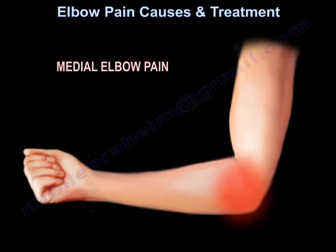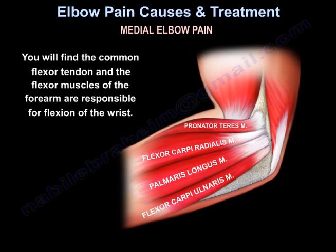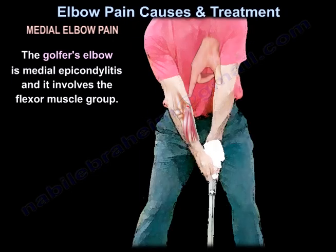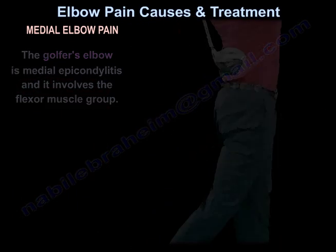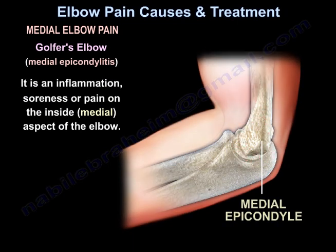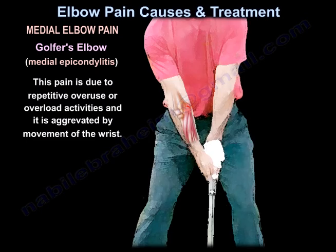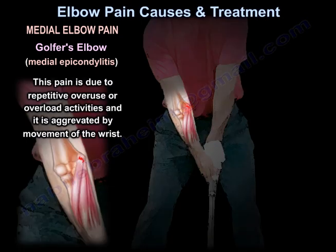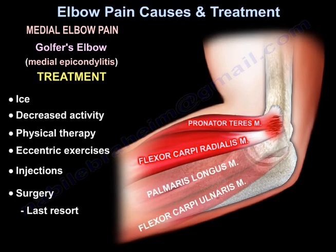For medial elbow pain, the common flexor tendon and flexor muscles of the forearm are responsible for flexion of the wrist. Golfer's elbow is medial epicondylitis and involves the flexor muscle group. It is an inflammation, soreness, or pain on the inside or medial aspect of the elbow. This pain is due to repetitive overuse or overload activities and is aggravated by movement of the wrist. Treatment includes ice, decreased activity, physiotherapy, eccentric exercises, injections, and surgery.